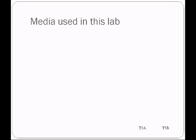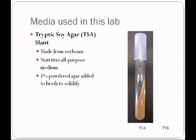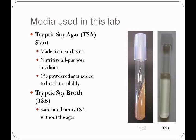In this lab we're going to be using two different types of media. We'll be using a solid medium known as tryptic soy agar, abbreviated TSA. It's made from soybeans and is a nutritive all-purpose medium — most non-fastidious organisms will grow on it. It is made with a broth and one percent powdered agar that solidifies it, and we allow it to solidify on a slant board to create a surface upon which we can inoculate bacteria. We'll also be using tryptic soy broth, an off-yellowish liquid medium made from soybeans — the same as TSA but with no agar added.